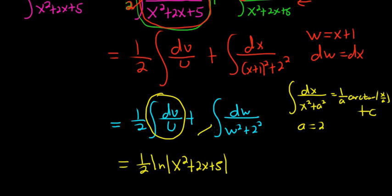And this piece here, this is going to be an arctan. So plus 1 over a arctan of w over 2, but w is x plus 1. So x plus 1 all over 2 and plus c.